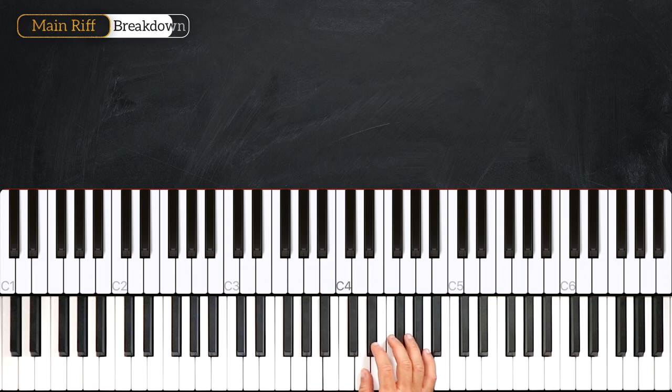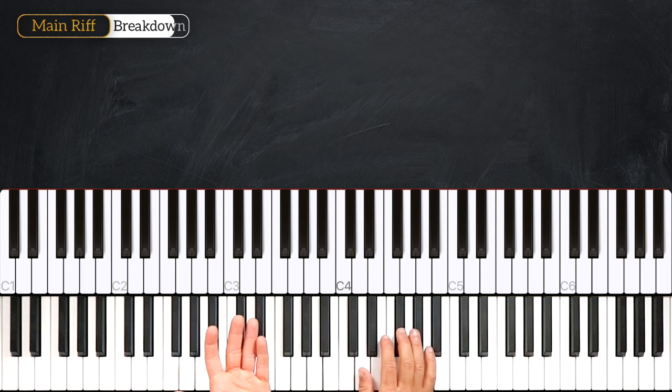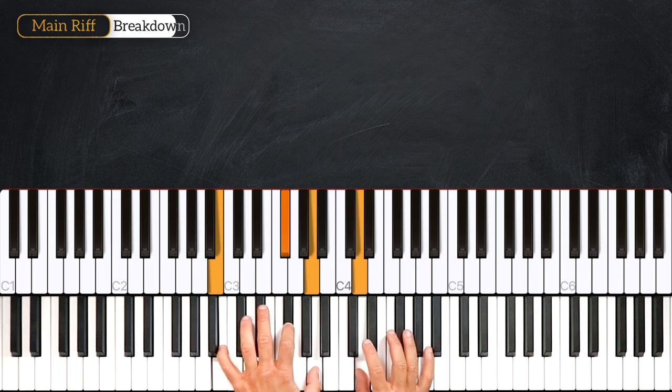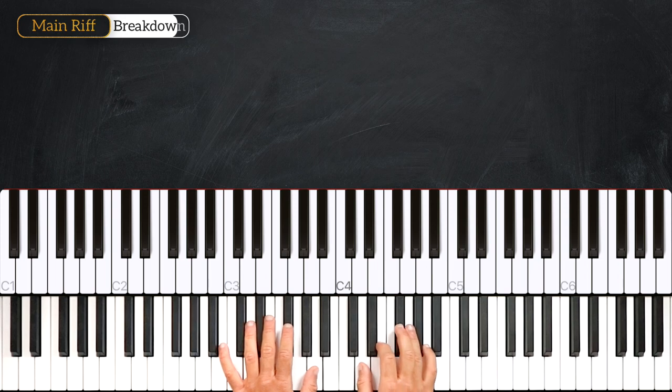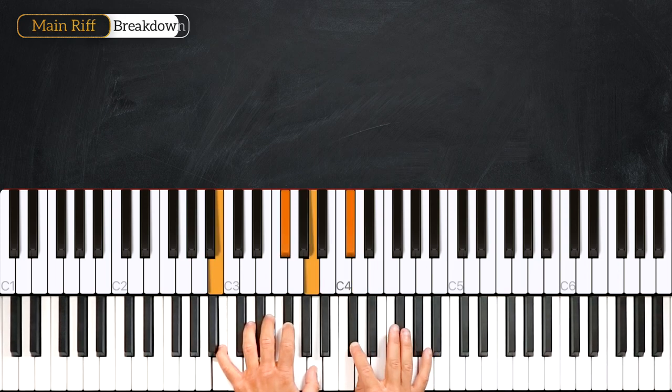So right hand will play this melody: D, D, C sharp, D, F sharp, while the left hand will play the B minor 7. Very nice. Once again, 3, 4, 1, 2, 3, 4.